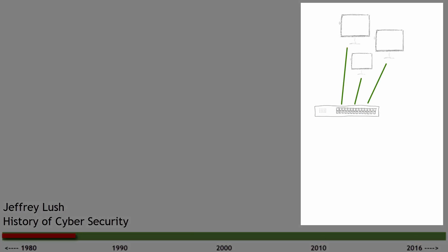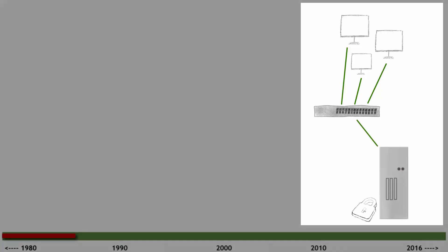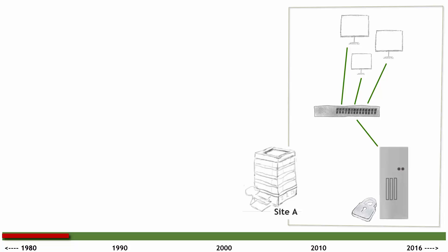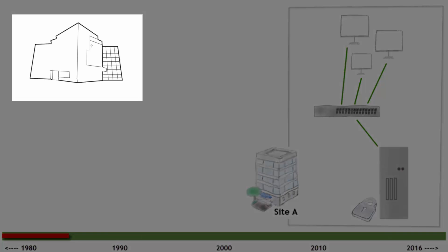To understand cybersecurity, we need to understand the history of computing. Here we're drawing out roll and scroll, or green screens as we call them, that would be connected to big iron. This is back pre-1980s. Very easy to secure - all encapsulated within a site. You needed physical access to compromise the data. Not that it was impossible, but it was more difficult than today.